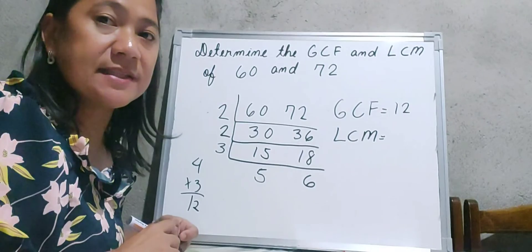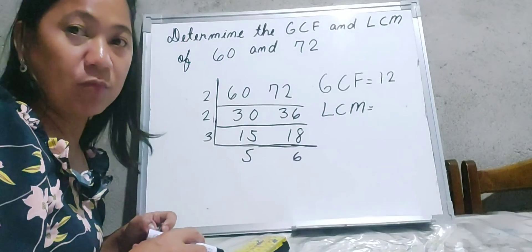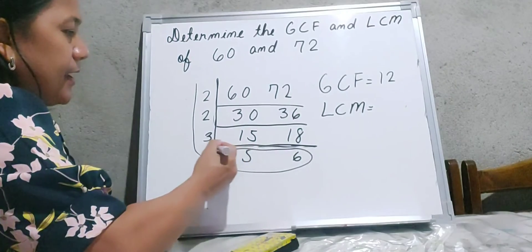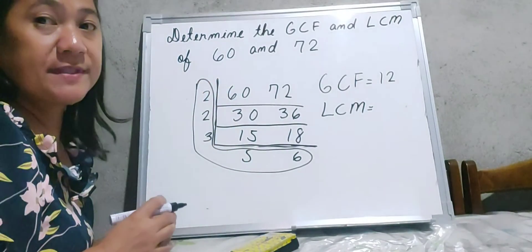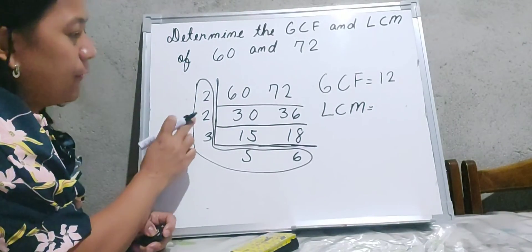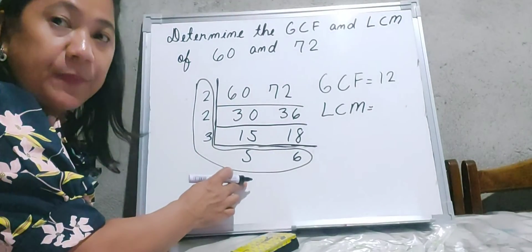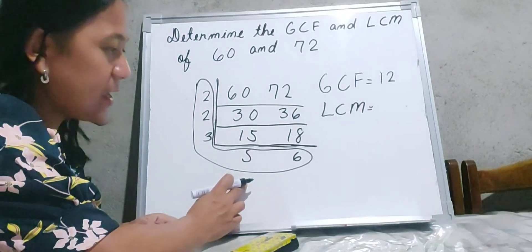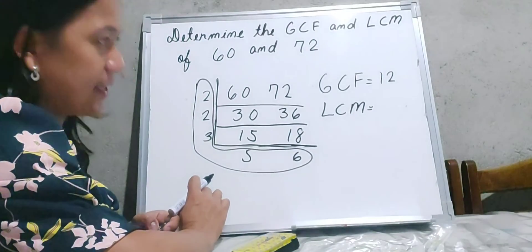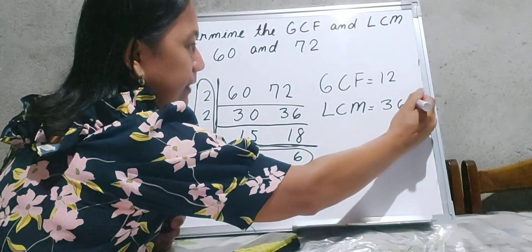Now for the LCM, the least common multiple of 60 and 72, we multiply all the numbers together: 2 times 2 is 4, 4 times 3 is 12, and 12 times 5 is equal to 60. So the LCM of 60 and 72 is 360.